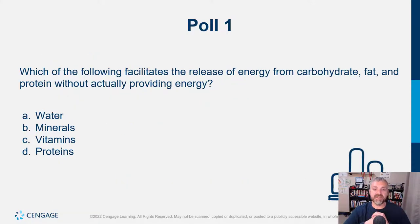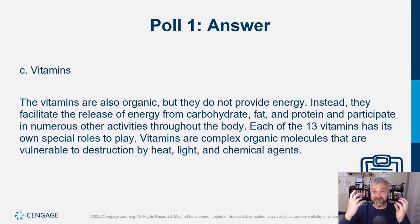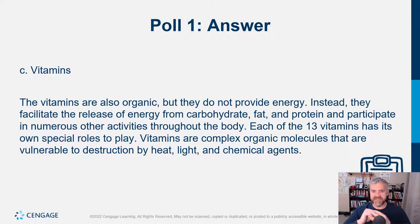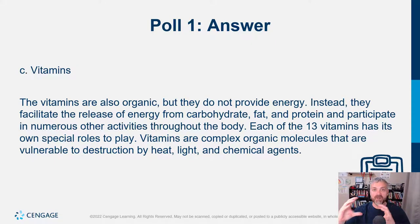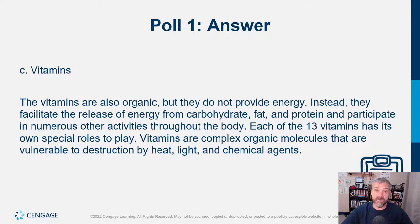What facilitates the release of energy from carbs, fats, and proteins without actually providing energy? That would be the vitamins — specifically your B vitamins. We'll cover this in the chapter on metabolism, but for example, riboflavin and niacin are B vitamins. They are what our electron carriers are built on, powering the entire process of generating ATP. So if it weren't for vitamins, we could not generate the energy that our cells need.